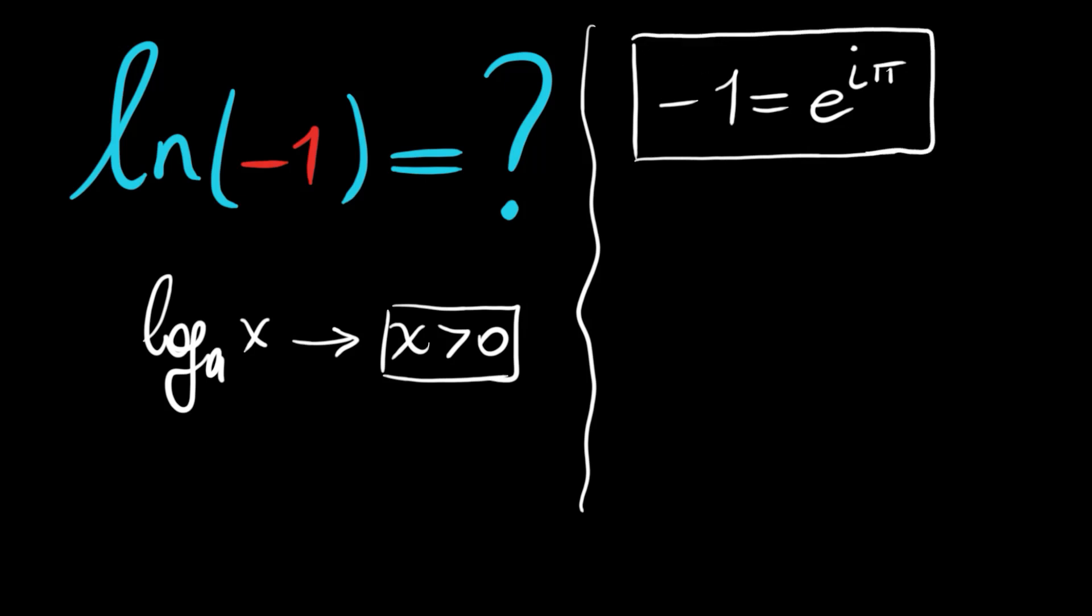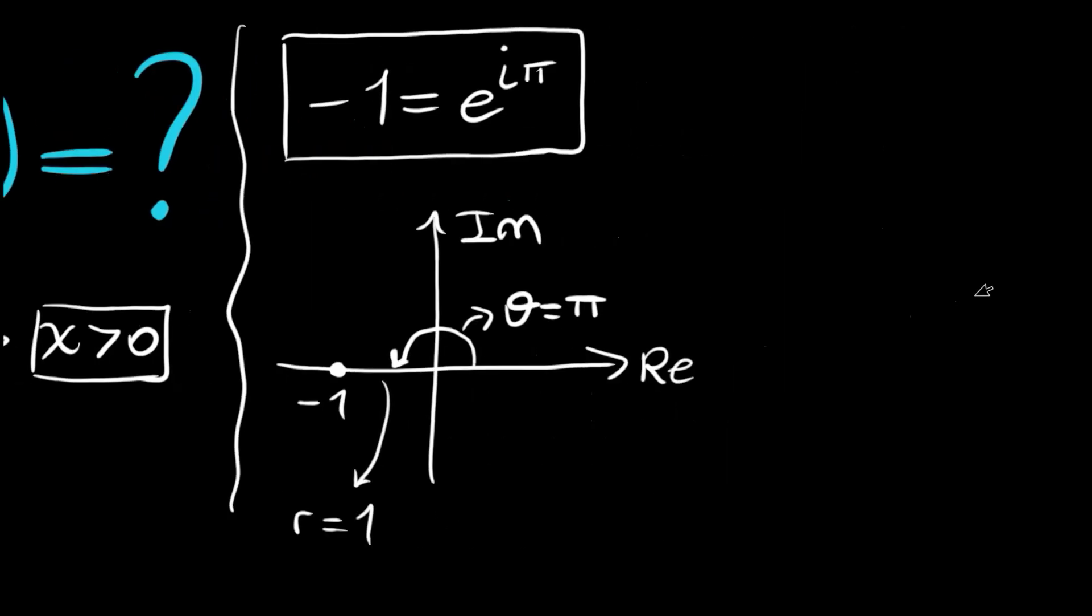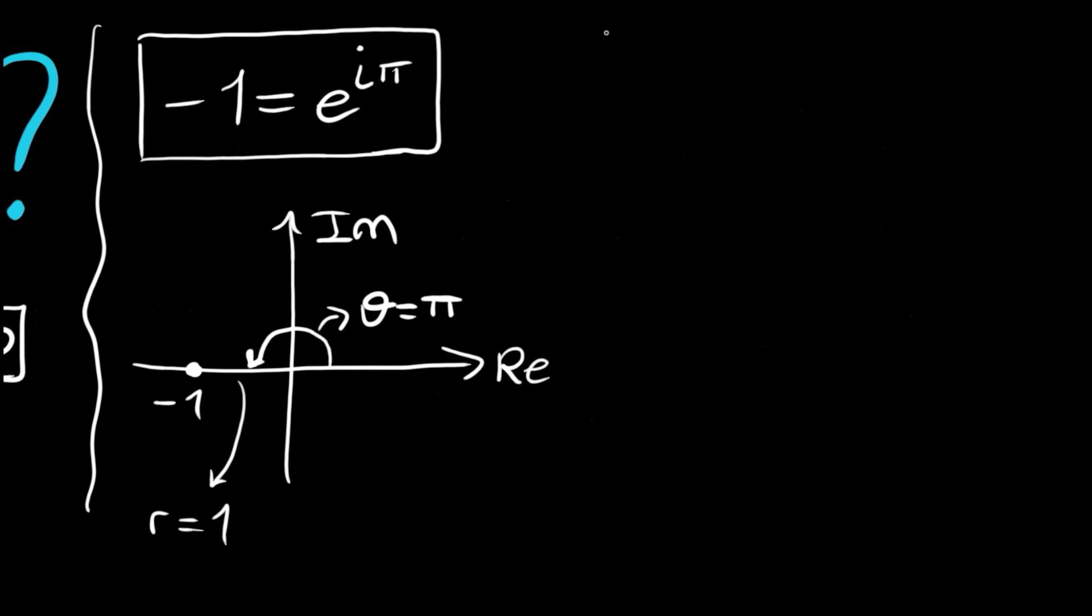Let me explain shortly. We have the complex plane, the real and the imaginary axis, and negative 1 stands on the negative side of the real axis. We have the length which is r equals 1, and the angle, the argument here, is pi. Theta is pi, so our negative 1...